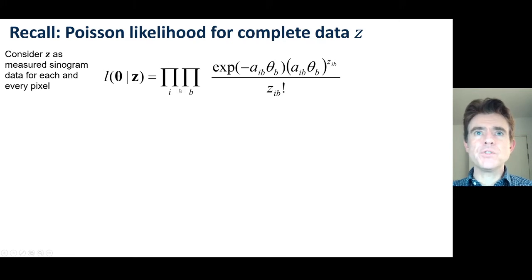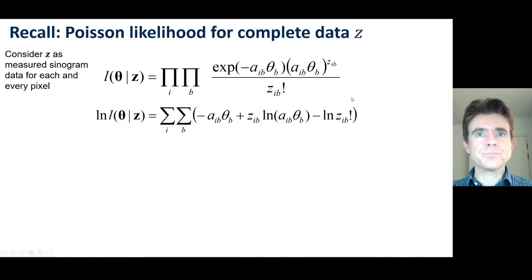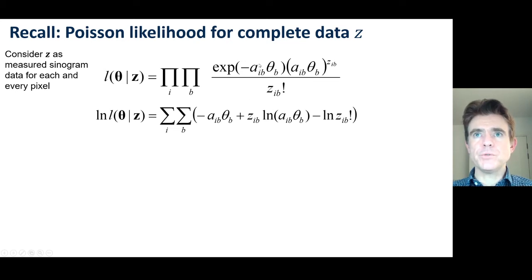We need to consider this Poisson likelihood for every single projection element I and for every single pixel indexed by B. We then take the Poisson log likelihood for the complete data: the products become summations, the exponential disappears, and this works through simply by taking the logarithm.